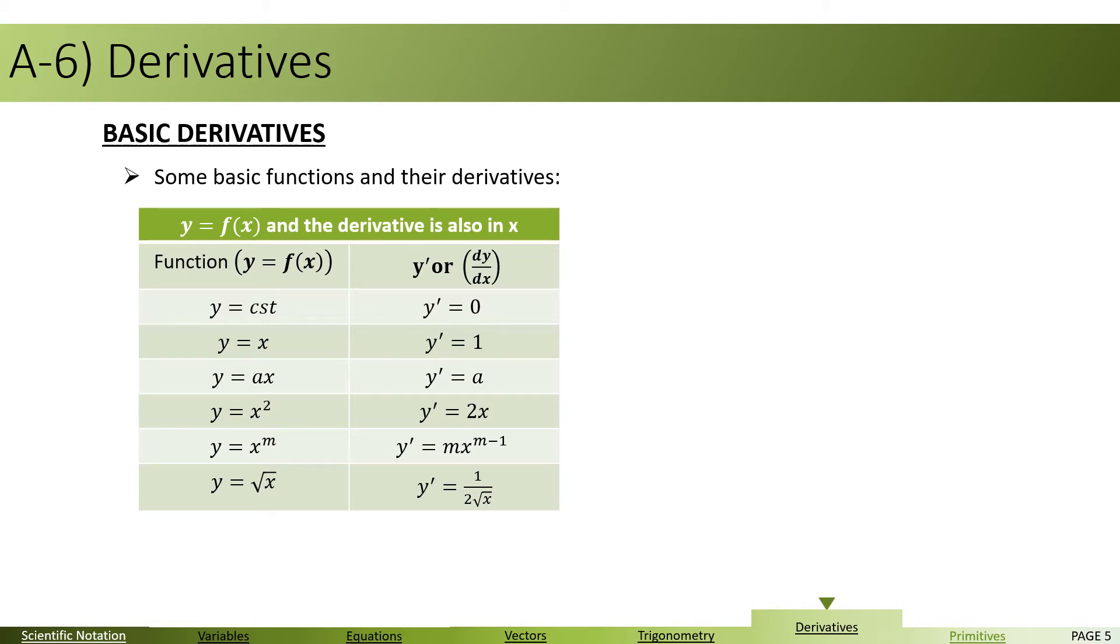For example, if y is constant, then y prime or the derivative is zero. If y equals x, the derivative is one. If y equals ax, then y prime equals a. Here we do not go in the details of how these derivatives are determined because I think you have seen them before. Y equals x squared, y prime becomes 2x.